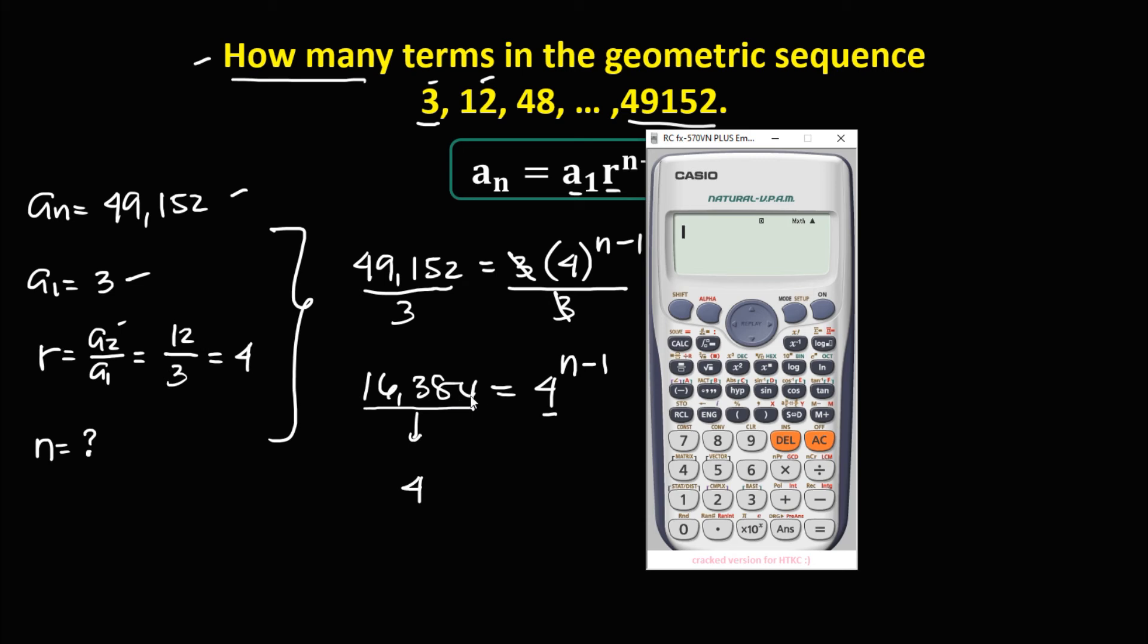So 16,384 with base 4. 4 to the power 5 equals 1,024. 4 to the power 7, that's 16,384. So therefore, this 16,384 is equal to 4 to the power 7.